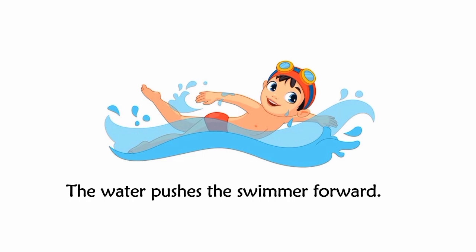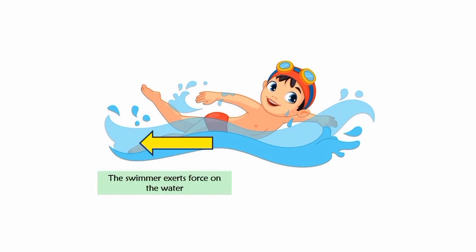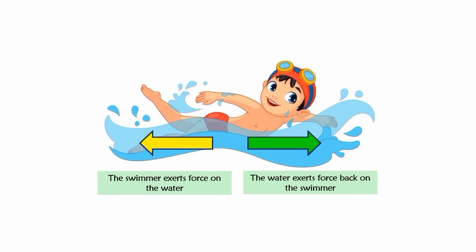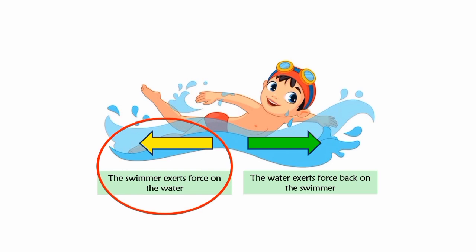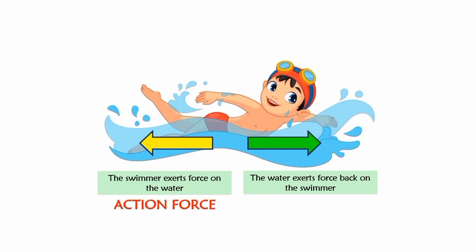When the swimmer exerts force on the water, the water also exerts force back on the swimmer in the opposite direction, causing him to move forward. In the interaction between the swimmer and the water, there is a pair of forces involved — one acting on the water and the other acting on the swimmer. We can call one force the action force and the other the reaction force.